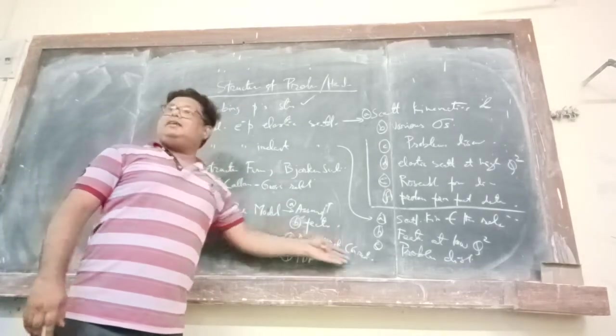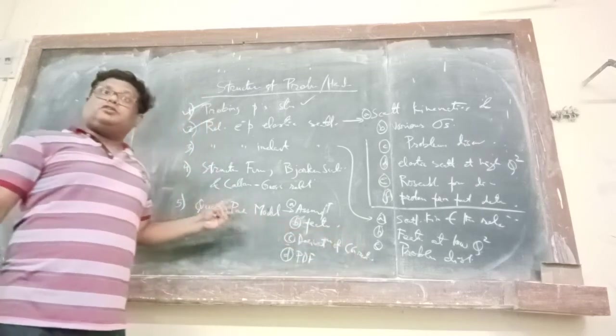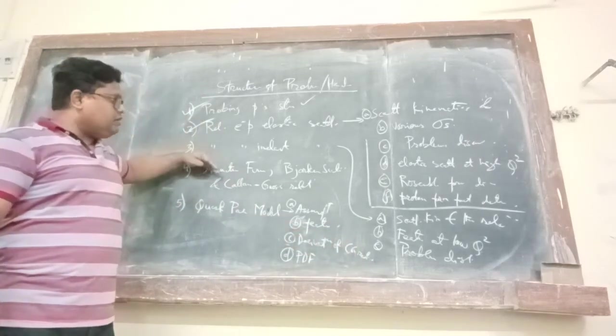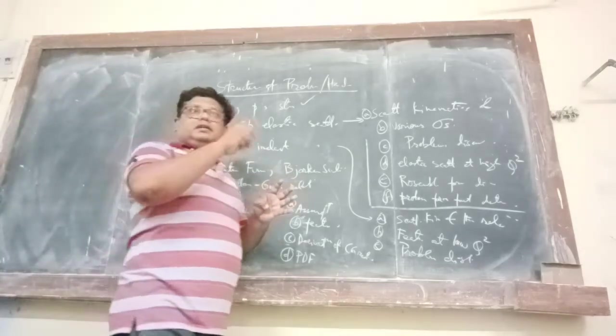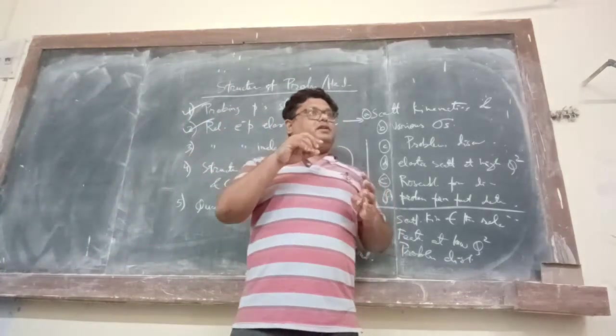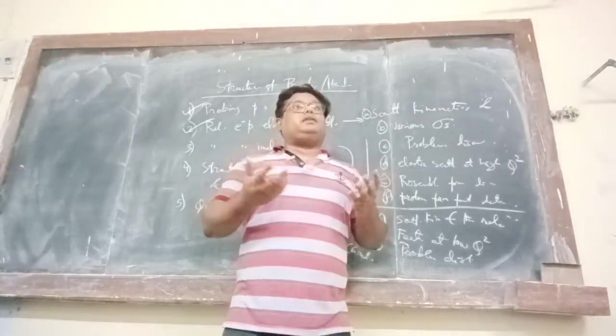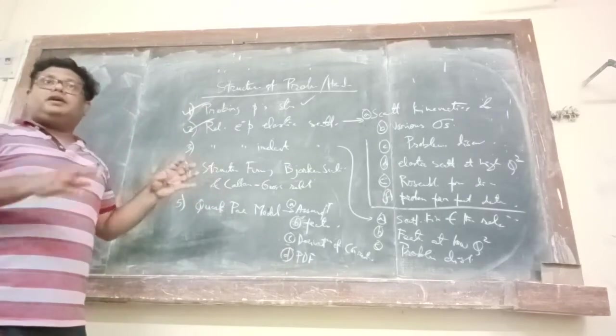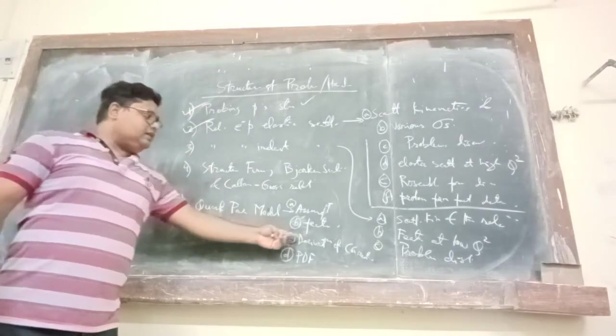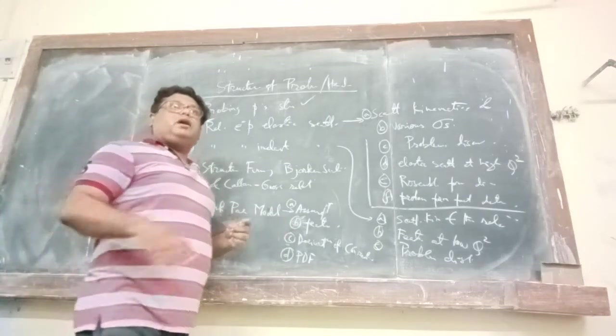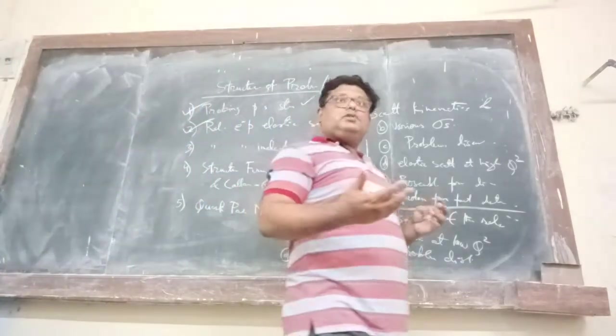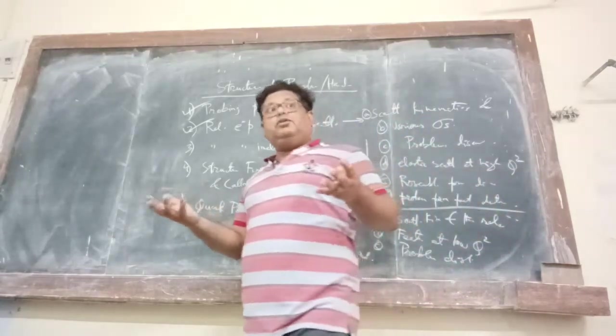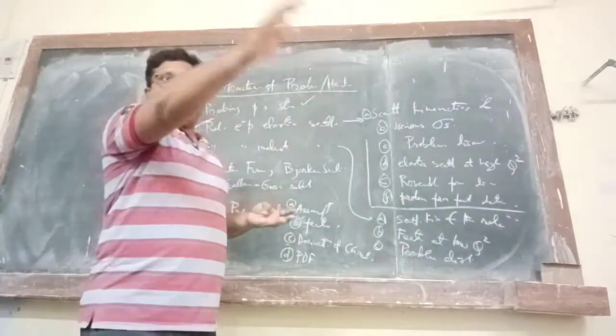Next, we derive the Callan-Gross relation in this part, parton model. How to derive this? Remember, we started with the structure function. We write it down in terms of delta functions. And then, we introduce what? The parton distribution functions. And after that, we were able to derive the Callan-Gross relation. Now, coming to parton distribution functions. What can be the various forms of the parton distribution? How do they look like in graph? Very simple.